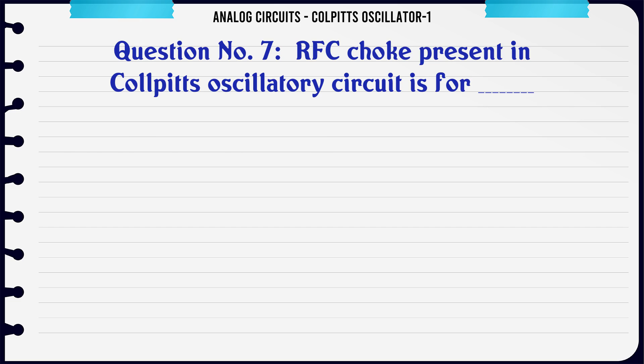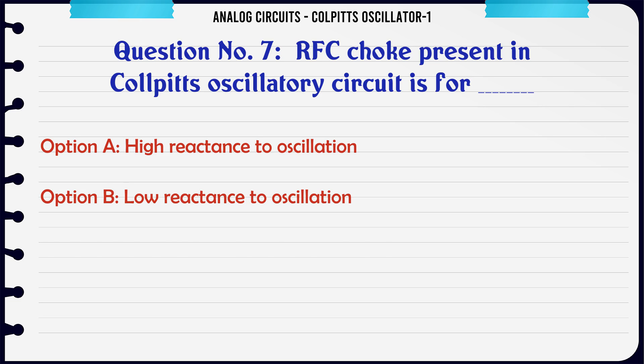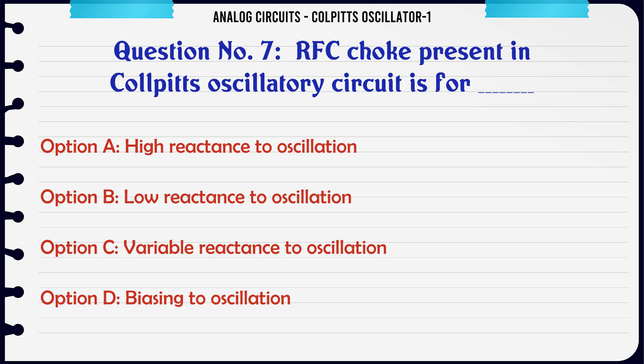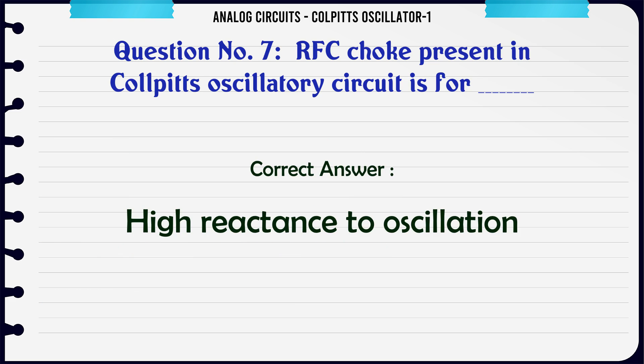RFC choke present in Colpitt's oscillator circuit is for: A) High reactance to oscillation, B) Low reactance to oscillation, C) Variable reactance to oscillation, D) Biasing to oscillation. The correct answer is: High reactance to oscillation.